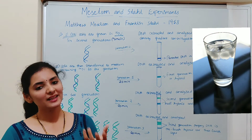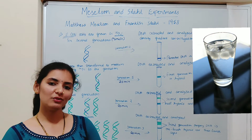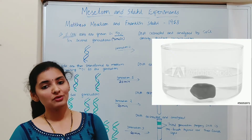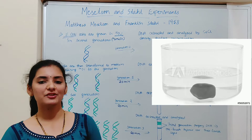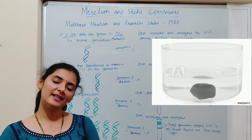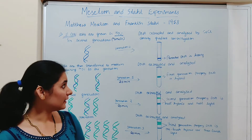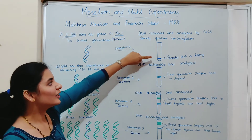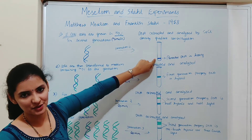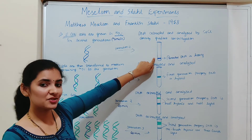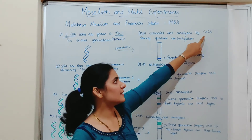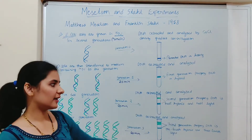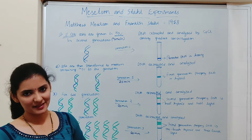Ice being less dense floats on water, while stone being more dense sinks. Similarly, N15 being heavier occupies the lowest position. The medium used here is not water — it is cesium chloride. That is the basic idea they used in this experiment.